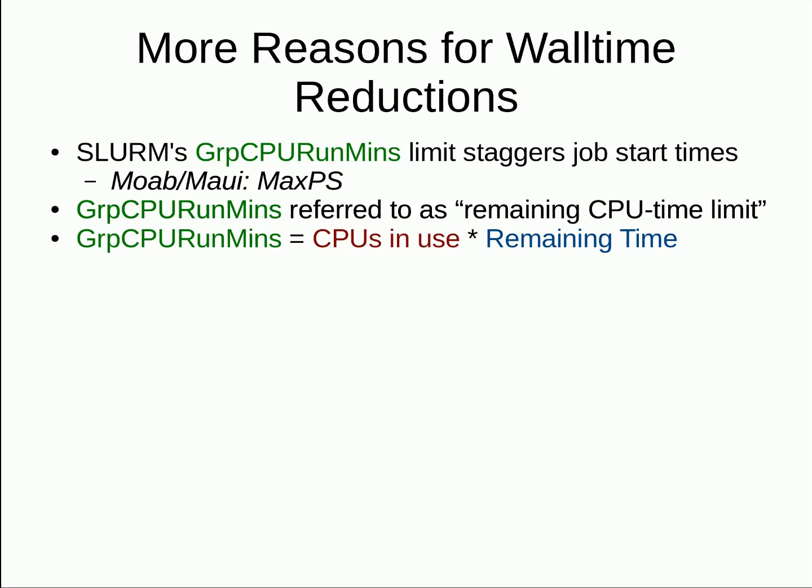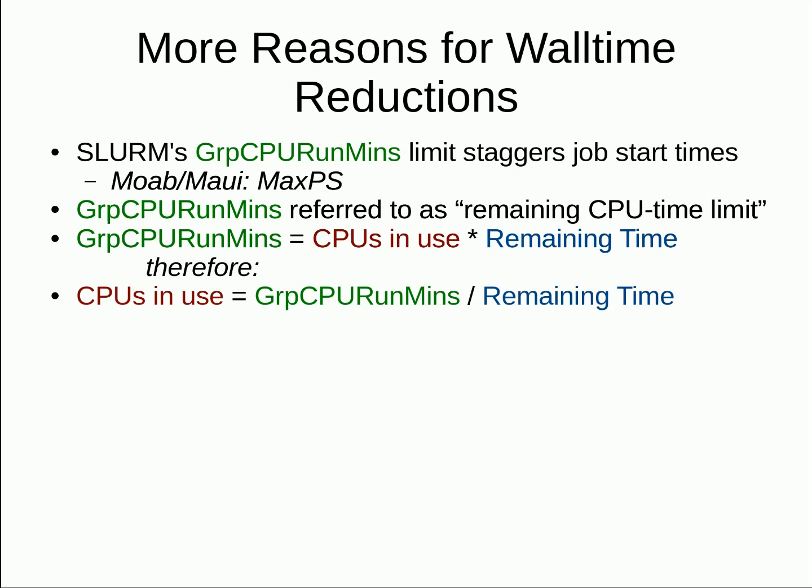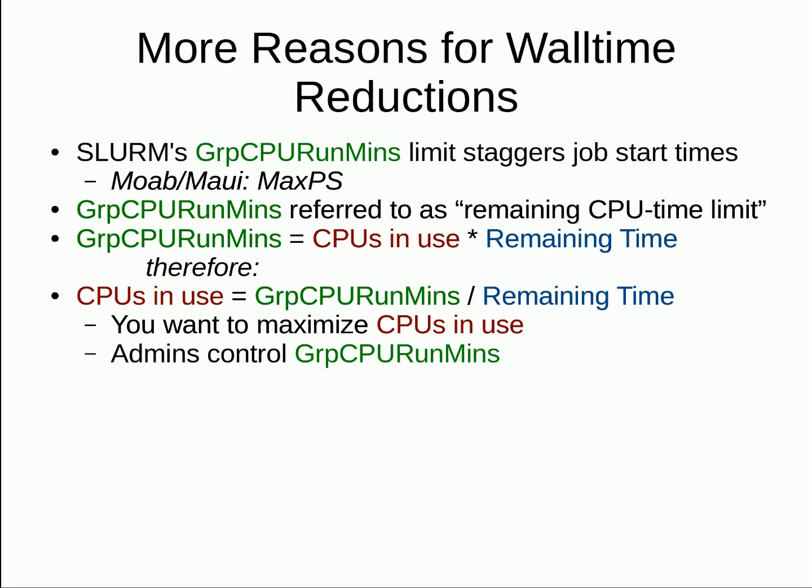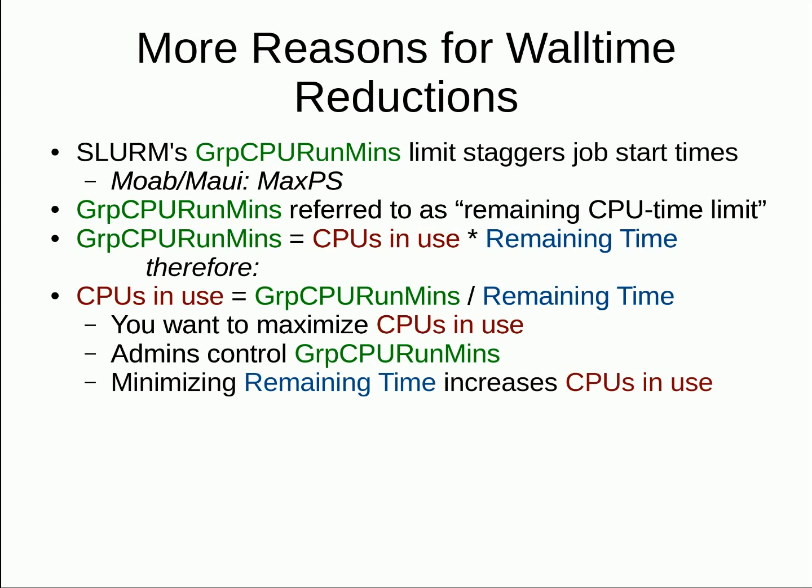After six more hours, another job can start, then after a little more time another, then another, and then the original three jobs finish. Eventually, it's going to stabilize so that jobs start on somewhat regular intervals. You can run many more jobs by shortening your wall time. Another way to think of it is that the maximum CPUs in use is equal to GRPCPU RunMins over remaining time. You want to maximize the CPUs in use, but don't have control over the GRPCPU RunMins limit. The variable that you control is the remaining time of your jobs. By shortening your wall time, this will reduce the remaining time of your jobs and allow more jobs to run at the same time, thus increasing your throughput.